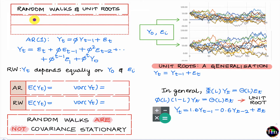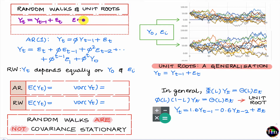Let's begin with a quick definition of a random walk. A time series y_t is said to follow a random walk if its process can be written as y_t equals y_{t-1} plus ε_t, the shock experienced in the current period. The shocks are white noise, meaning they have a zero mean and a constant variance σ², and they are serially uncorrelated.